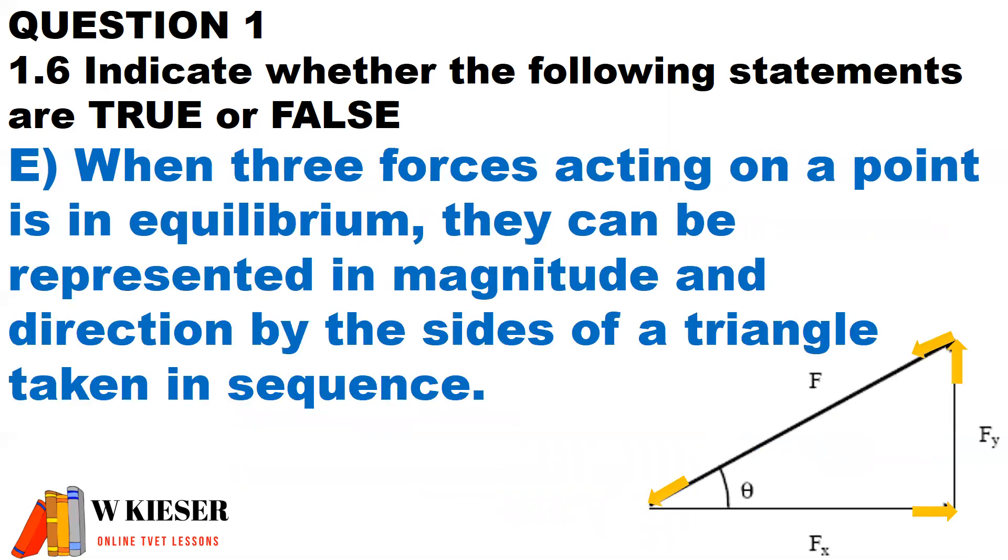In part E, when three forces acting on a point is in equilibrium, they can be represented in magnitude and direction by the sides of a triangle taken in sequence. If we have a look at this triangle, you'll notice that the arrows are pointing in the same sequence. Therefore, the answer would be true.